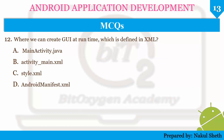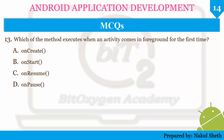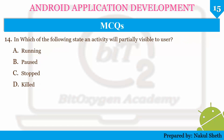Next question: where can we create a GUI at runtime which is defined in XML? The options are MainActivity.java, activity_main.xml, style.xml, or AndroidManifest.xml. The correct answer is MainActivity.java. Next question: which of the following method will execute when an activity comes to the foreground for the first time? The options are onCreate, onStart, onResume, or onPause. The correct answer is onCreate, because onCreate is the first method to be called by the Android compiler.